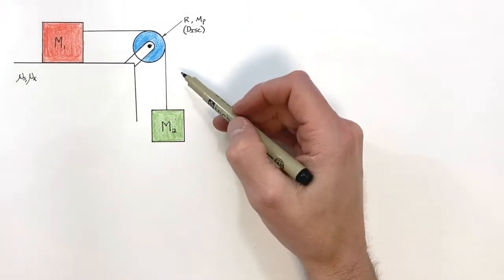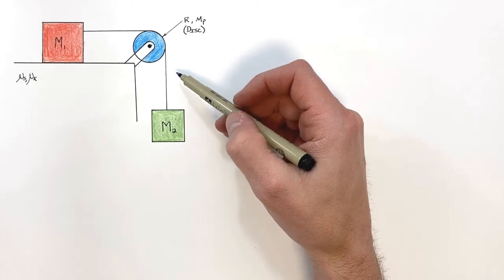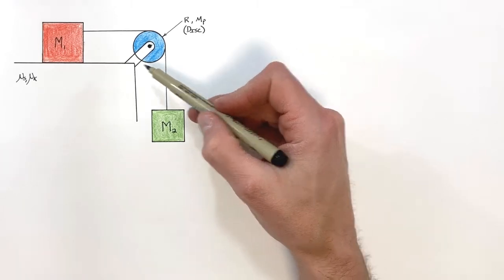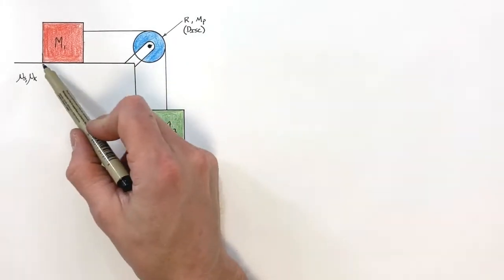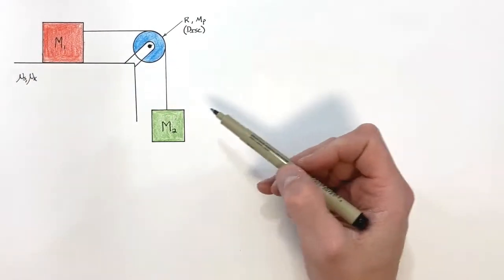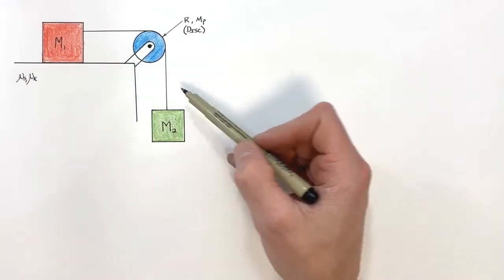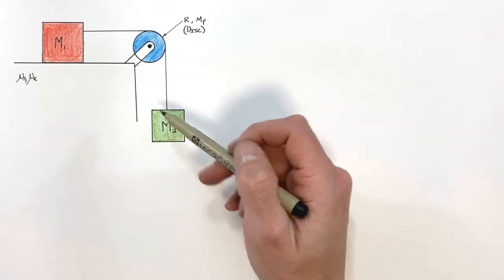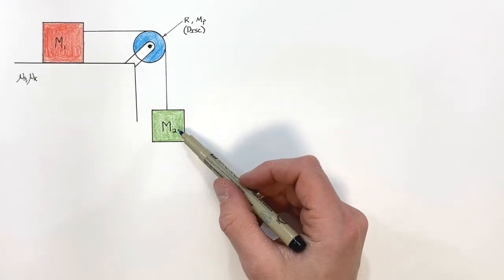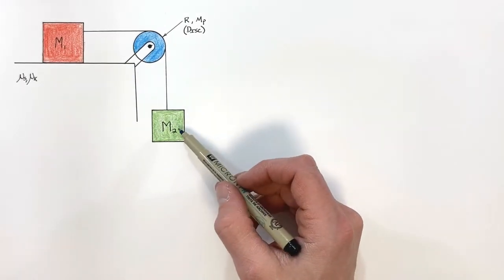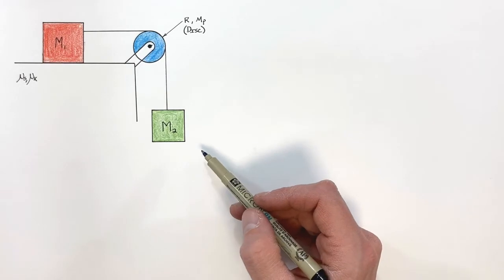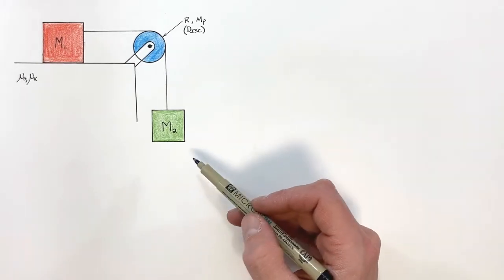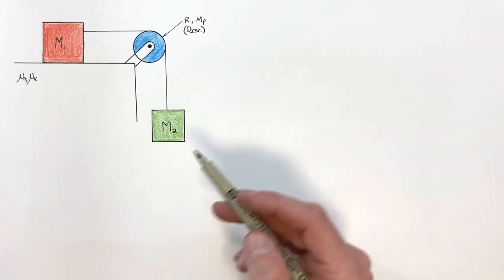The first thing we need to work out is whether this system is even going to move. If there's enough friction between the block and the surface, nothing's going to happen. So what I want to do is take a look at a free body diagram showing all the forces acting in this system and see what happens.